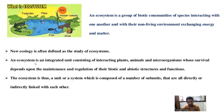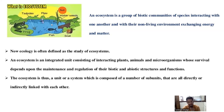An ecosystem is an integrated unit consisting of interacting plants, animals, and microorganisms whose survival depends upon the maintenance and regulation of their biotic and abiotic structure. The ecosystem is a unit or system composed of a number of subunits — water, sunlight, and soil form one unit, while frog, fish, snail, and plants form another unit. Both units are interdependent and linked with each other. This is called an ecosystem.